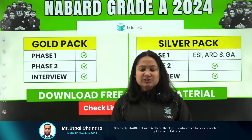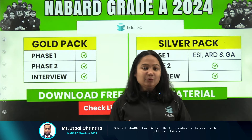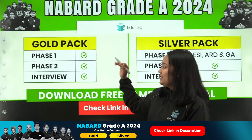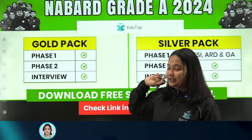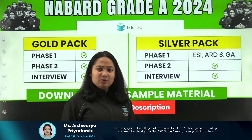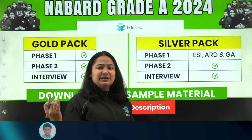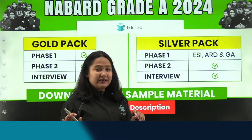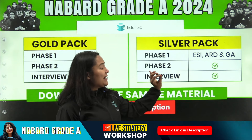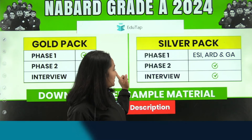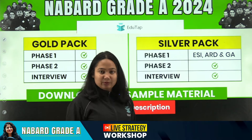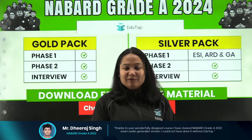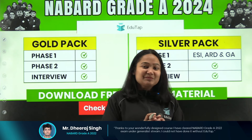If you're looking for quality courses and don't want to refer to 10 different sources, we have two courses: the Gold Pack and the Silver Pack. In the Gold Pack you get complete hand-holding for Phase 1, Phase 2, and the interview — every material you need will be there. The Silver Pack is for those who've already prepared for quant, reasoning, and English through banking or other exams. It focuses on Phase 2 — covering ESI, ARD, and GA for Phase 1 as well — plus complete Phase 2 preparation and interview guidance. You can download free sample material to see what we provide.